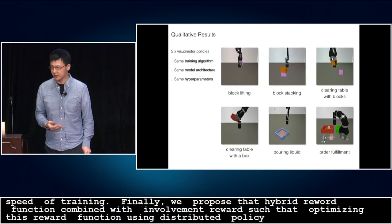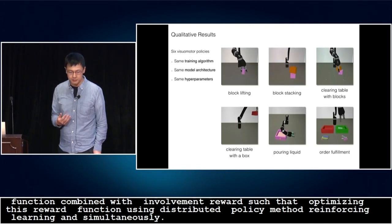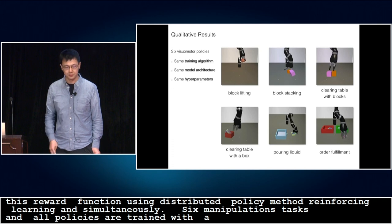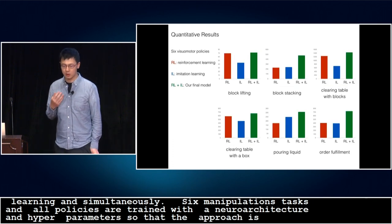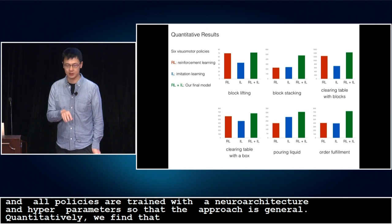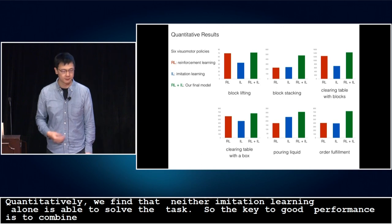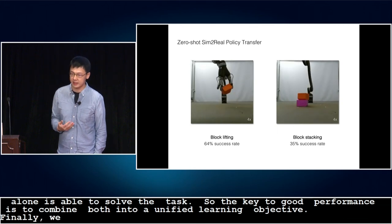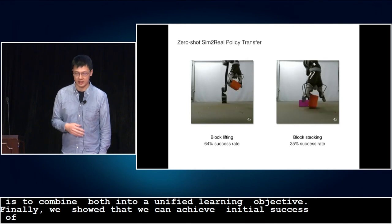We evaluate our policy in six manipulation tasks. All six visual motor policies are trained with the same algorithm, the same neural network architecture, and the same hyperparameters, so the approach is general. Quantitatively, we find that neither reinforcement learning nor imitation learning alone is able to solve the tasks. The key to good performance is to combine both into a unified learning objective. We also show initial success in transferring the policy trained only in simulation onto a real robot without any real-world fine-tuning.